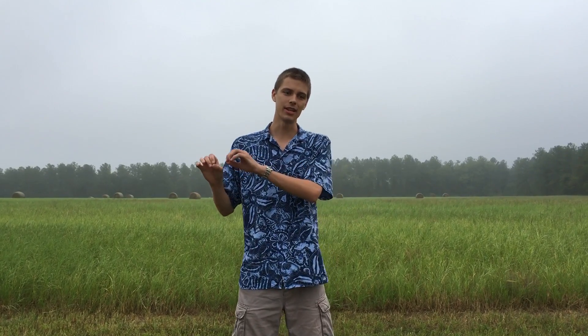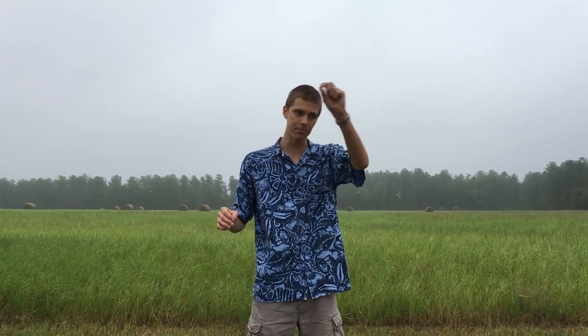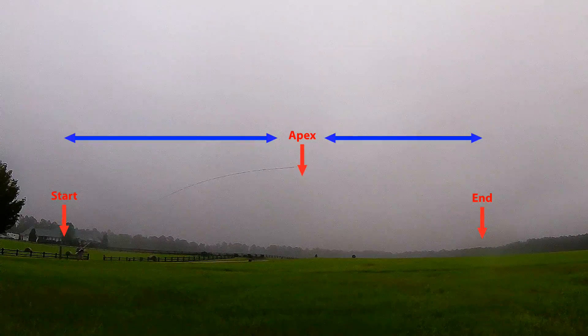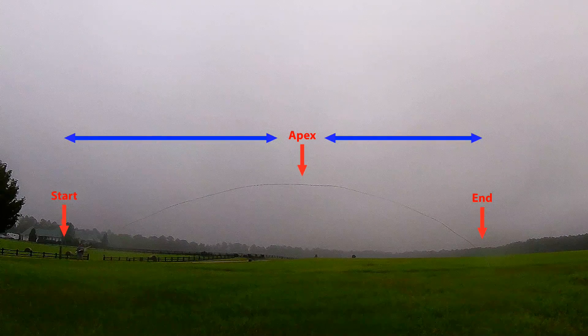When the sideways motion is unaffected and the vertical motion is only affected by the constant acceleration of gravity, the shape of the trajectory mapped out in the sky is a perfect parabola. But careful-eyed viewers may note that this was not actually a perfect parabola - it was close, but it's sort of asymmetrical.